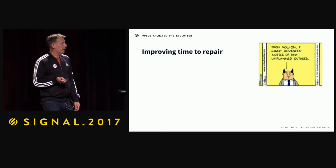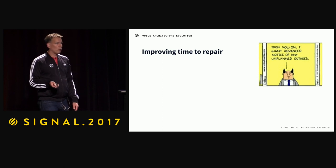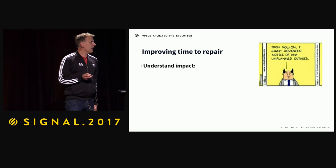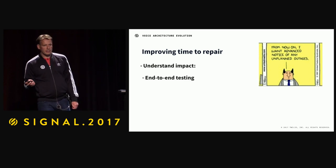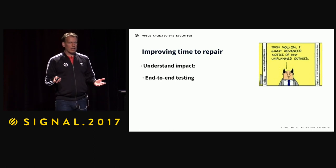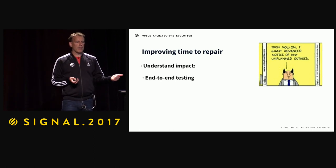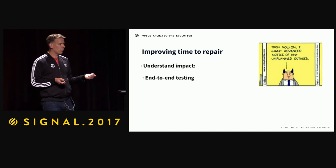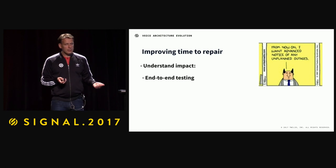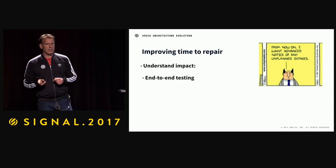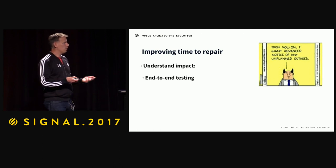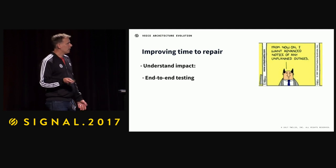Improving time to repair is also very important to reduce downtime. First, understand impact. We've deployed end-to-end testers in all the key markets where our customers are, and this allows us to quickly understand the impact. For example, if the end-to-end tester in Australia alerts but no other tester alerts, we're pretty sure the impact is in Australia or between Australia and the US.